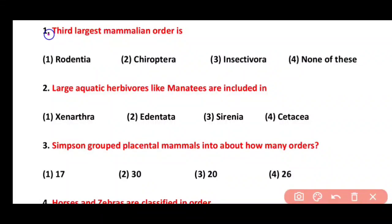Question 1. The third largest mammalian order is: Rodentia, Chiroptera, Insectivora, or None of these. Correct answer is option 3. Insectivora, or order Soricomorpha, is the third largest mammalian order.